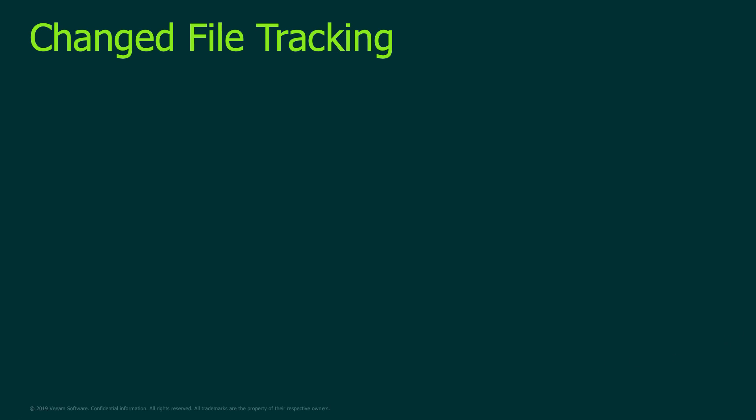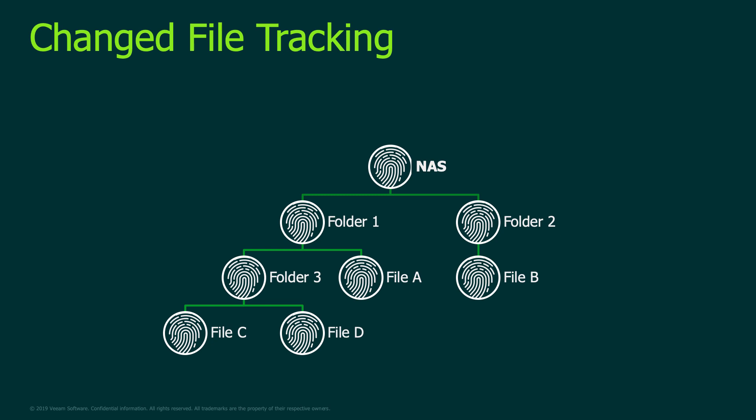From a change file tracking perspective, you saw that we built out the file structure — a folder and file structure here, folder one, folder two, et cetera. On day one, as I mentioned, we're not magicians. We have to walk the whole file tree and take those backups. We can make things more performant by scaling out our file proxy, which allows us to have additional concurrent tasks to work with.